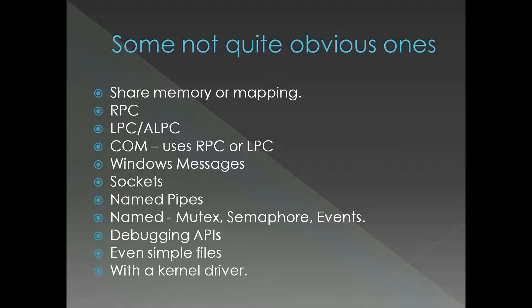Additional IPC mechanisms include debugging APIs, simple files as mentioned, clipboard, and custom kernel drivers. If you have a custom kernel driver you can do inter-process communication — for example, in post-Windows 8 and later operating systems, a console application uses a kernel driver for its inter-process communication mechanism. Let's see a quick demo of a couple of inter-process communication examples.